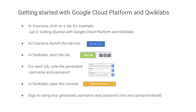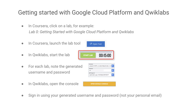Inside of Coursera, you're actually going to see a lab or an item that's marked out for an external tool to open up. You're going to click on that tool. After that, you're going to see a Start Lab button in green and a timer associated with it for you to complete the lab in that duration.